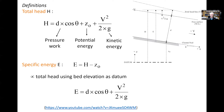The second key definition is specific energy, E. By definition, the specific energy equals the total head minus the bed elevation, H minus z₀. In other words, the specific energy is the total head using the local bed elevation as a datum. Hence, we obtain E equals d·cos(θ) + v²/2g.